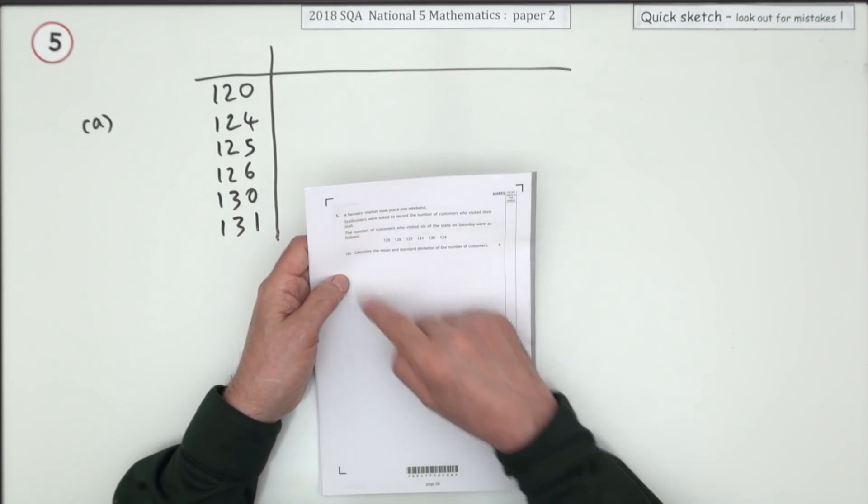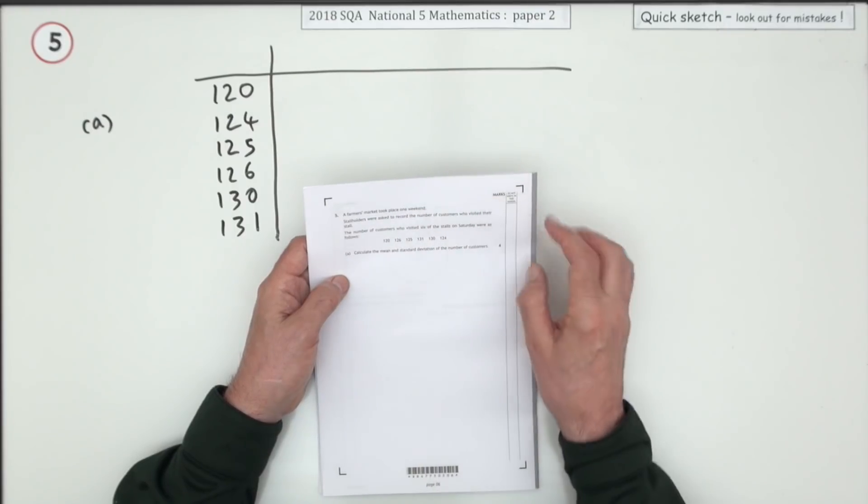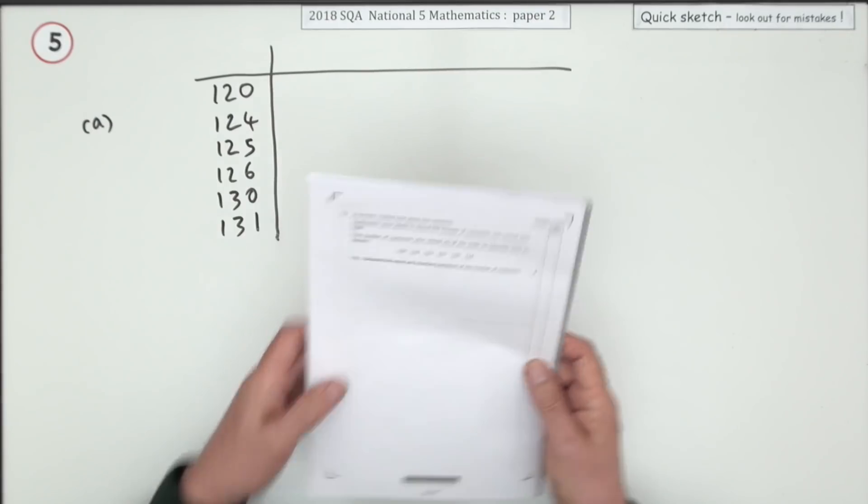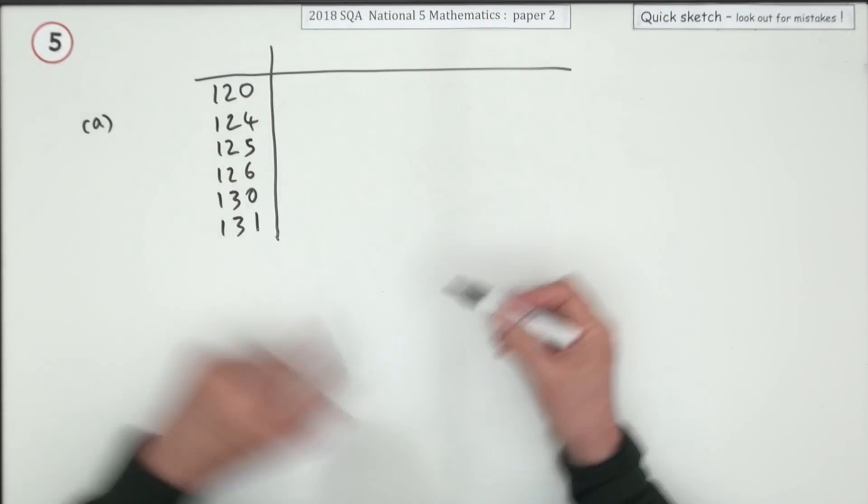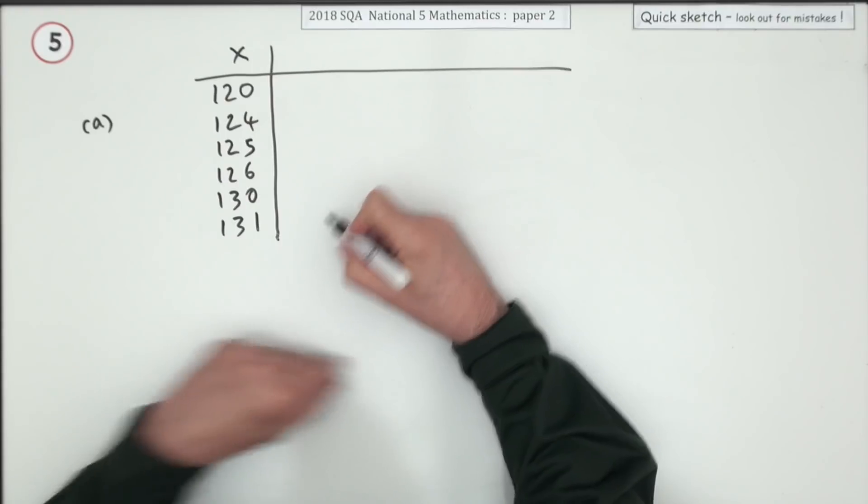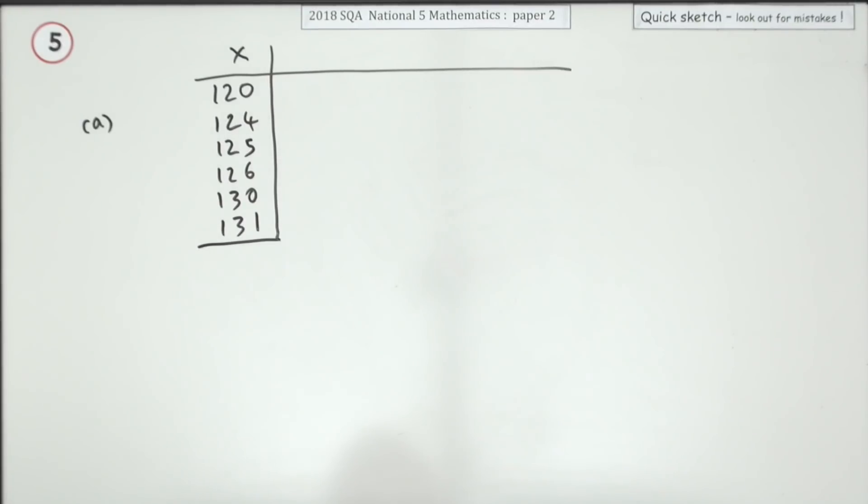This is the number of customers visiting a farmer's market on a Saturday. You have to get, for four marks, the mean and standard deviation. I've already started the table off here. I like to put them in order, but of course don't need to. So if that's the column X, the first thing I'm going to do is add up these numbers.